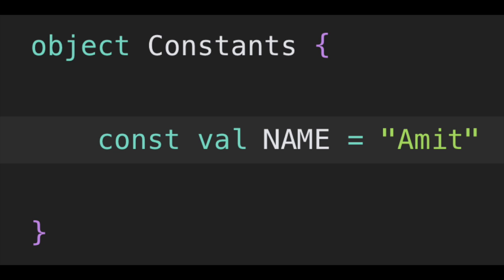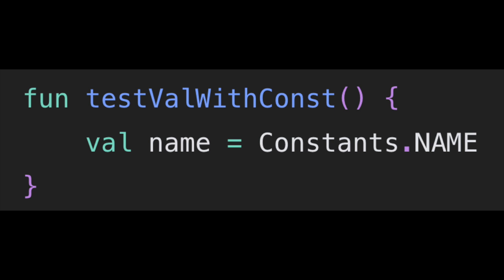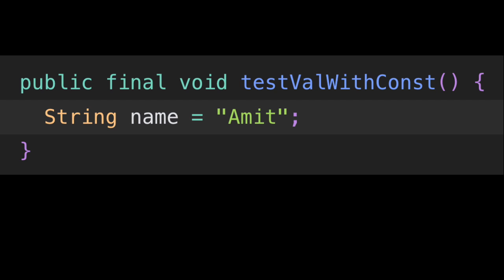Now suppose we are using const. We have modified our object class Constants so that it now reads: const val name = 'Amit'. We must notice that we are using the const keyword here. Then if we try to access it — I have created the function 'test val with const' with val name = Constants.name — and now if we decompile, we will get the following output.